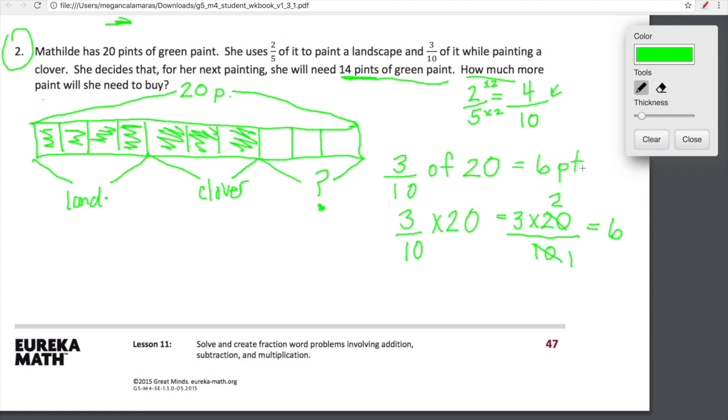She needs 14 pints for her next masterpiece. If we have 6 pints, she needs 14 pints. Let's figure out how much more she needs to buy at the paint store. All we need to do is 14 minus 6.